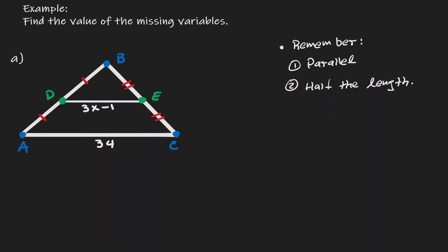Since D and E are the midpoints, we can use the midpoint triangle theorem. Let's remember two properties that always hold when we connect the midpoints of any triangle. First, the segment DE is going to be parallel to its opposite side, which in this case is AC. And in addition, it's also going to be half the length of its opposite side, and that's the property we'll be using here.